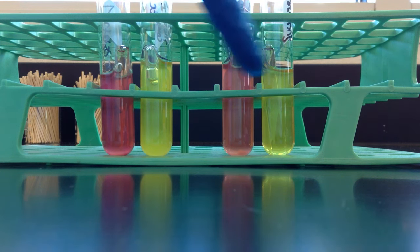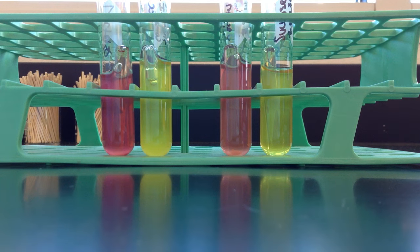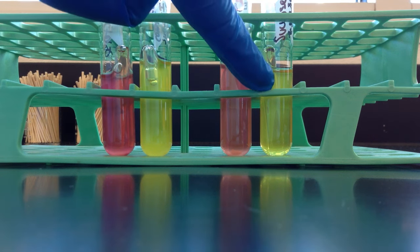On the right here, you've got the sucrose tubes, the same idea. Again, if an acid is produced, you get a yellow color.